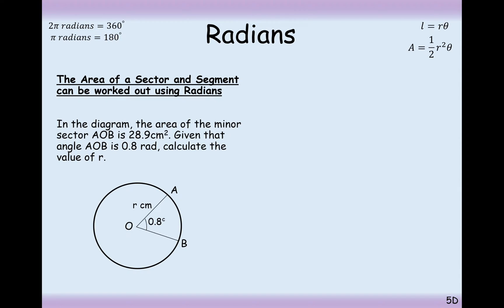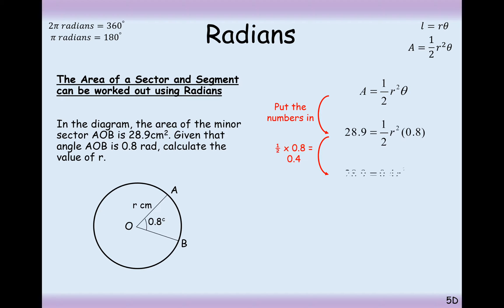In this diagram here we have a minor sector with an area of 28.9 centimetres squared. Given that the angle is 0.8 radians, calculate the value of r, the radius. So we know the area is equal to half r squared theta, substituting the two values that we have and we can now just rearrange.